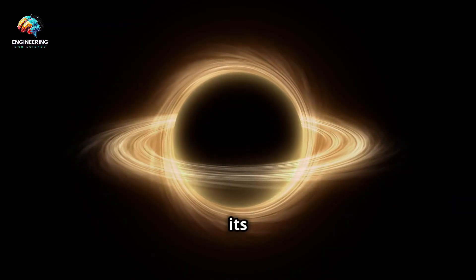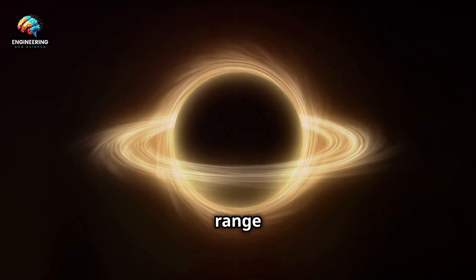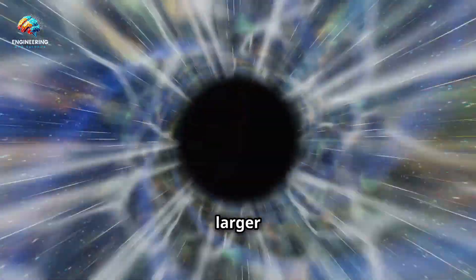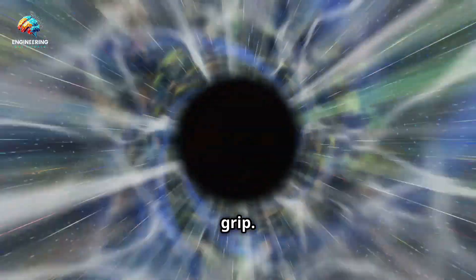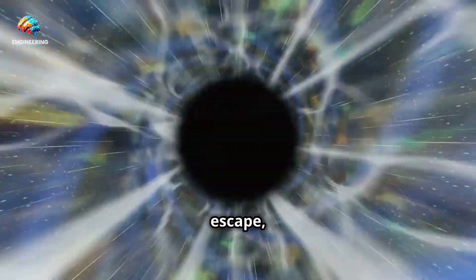The mass of a black hole determines its size and the strength of its gravitational pull. This mass can range from a few times that of our sun to billions of solar masses. The more massive the black hole, the larger its event horizon and the stronger its gravitational grip. The event horizon is the boundary beyond which nothing can escape, not even light.